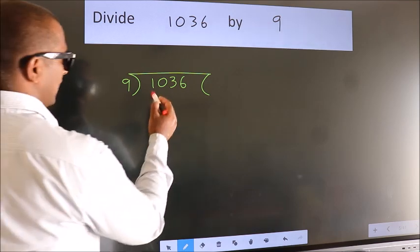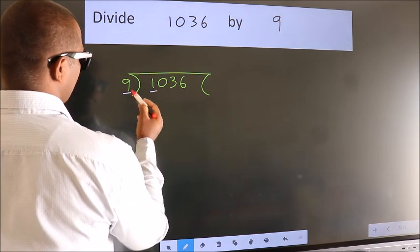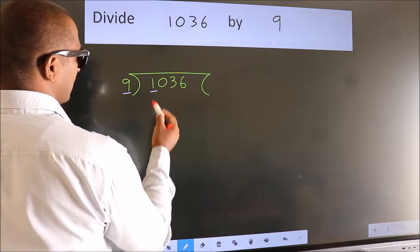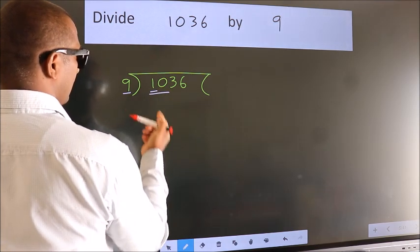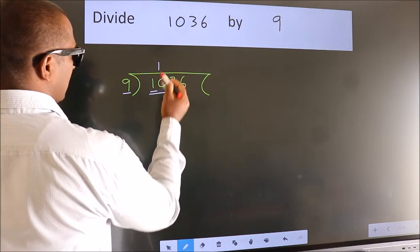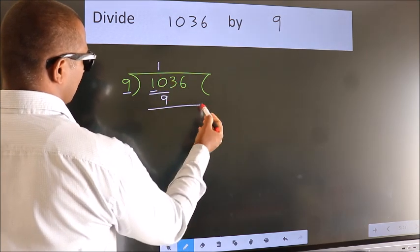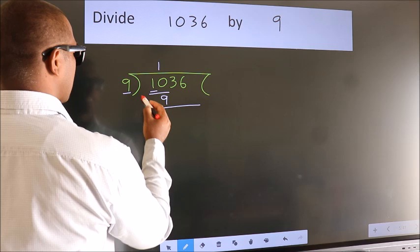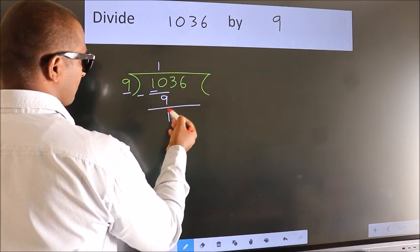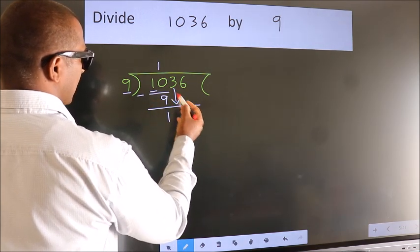here we have 1, here 9. 1 is smaller than 9, so we should take 2 numbers: 10. A number close to 10 in the 9 table is 9 once, 9. Now we should subtract. We get 1. After this, bring down the beside number.